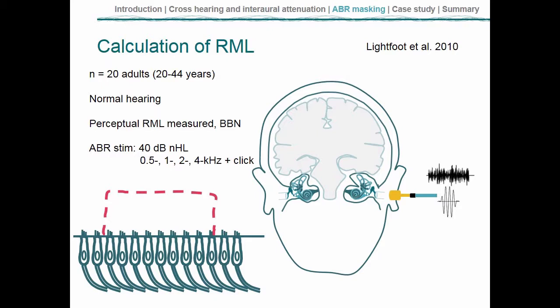Even with relatively frequency-specific stimuli like tone pips, their short duration means a degree of spectral splatter and therefore a wide range of activity on the basilar membrane. The same applies to more recent stimuli such as the broadband chirp, which is deliberately designed to activate a wide range on the basilar membrane, and even narrowband chirps still activate a relatively wide range compared with pure tone stimuli used in pure tone audiometry.